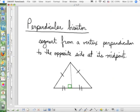Perpendicular to the opposite side at the midpoint. So if I draw a line segment from a vertex and it's perpendicular to the opposite side, what could I call it?